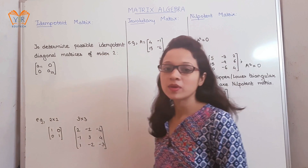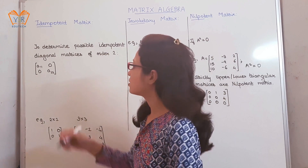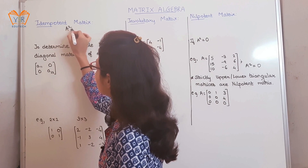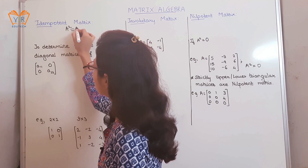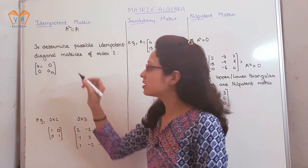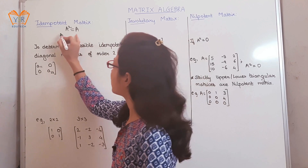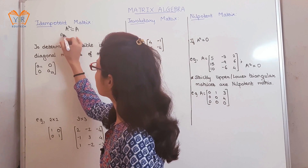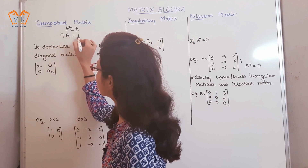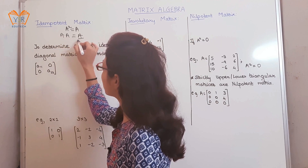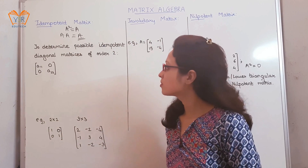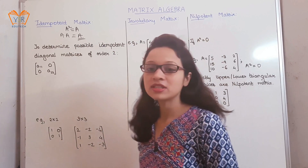Any square matrix A is called an idempotent matrix if A squared is equal to A. That is, when any matrix is multiplied by itself, the resultant matrix will be the same matrix.